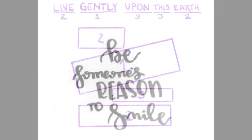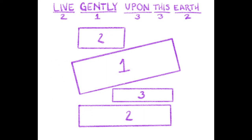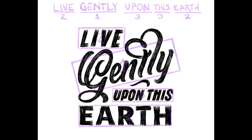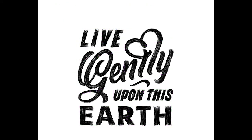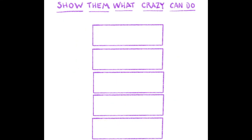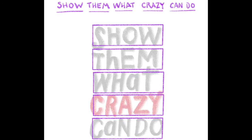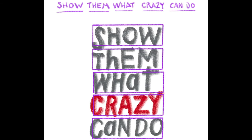And here I'm doing another one with the same quote, live gently upon this earth. And you can see how live and upon this sort of nest into gently. You could also have all the words the same size and use color to make one or two of them more important.